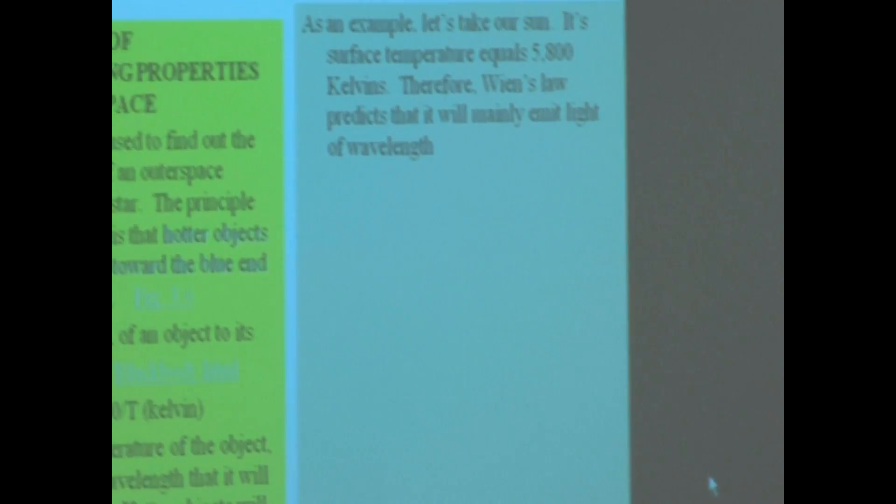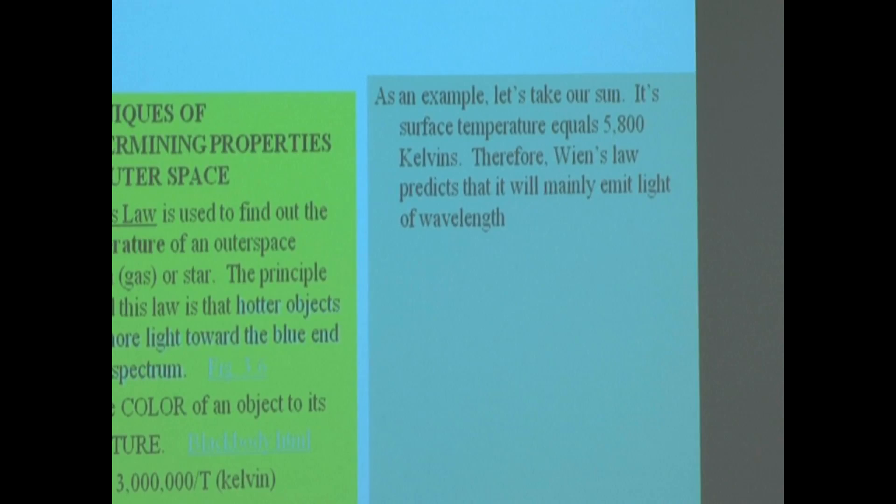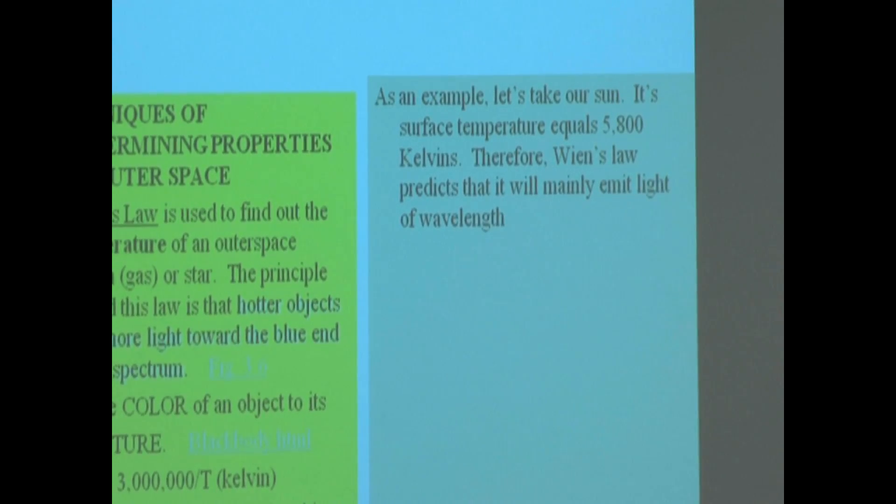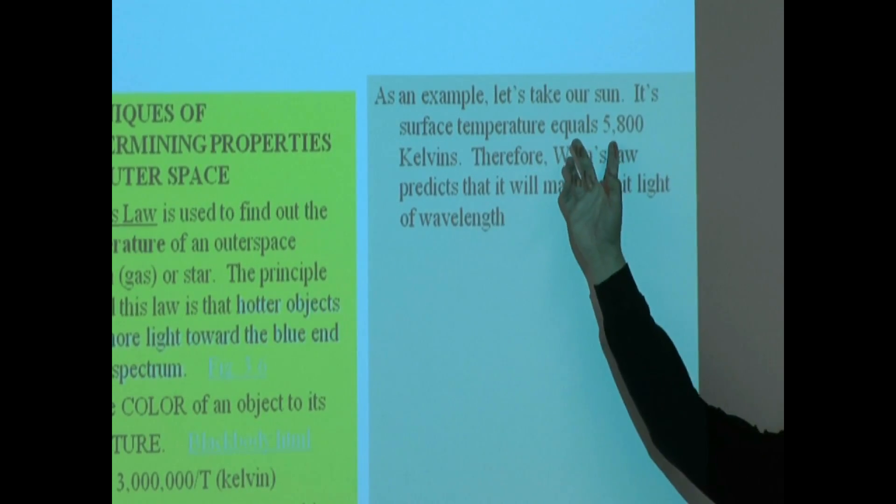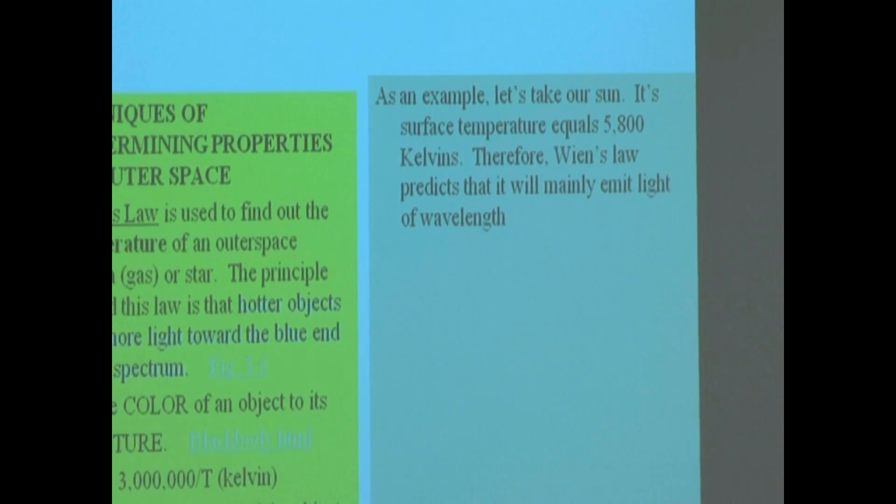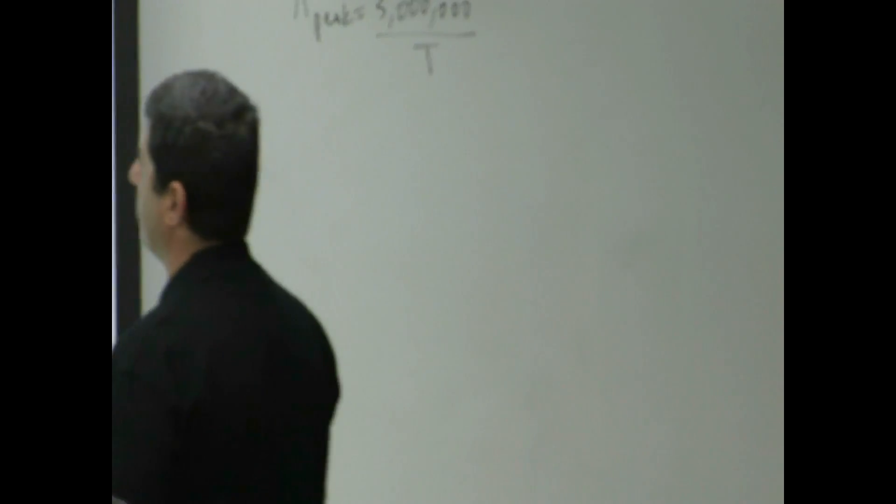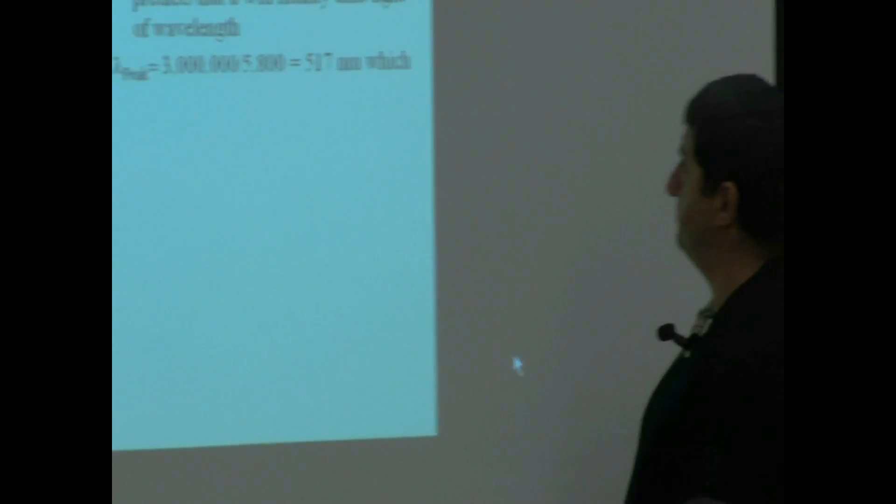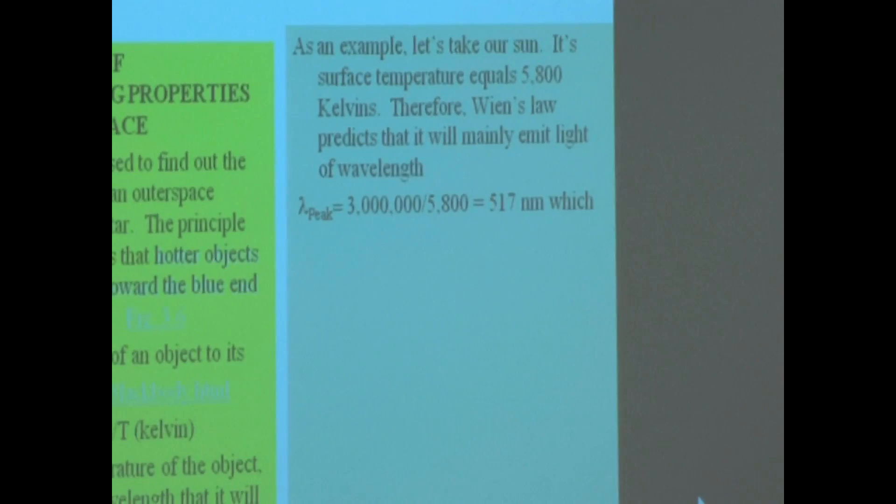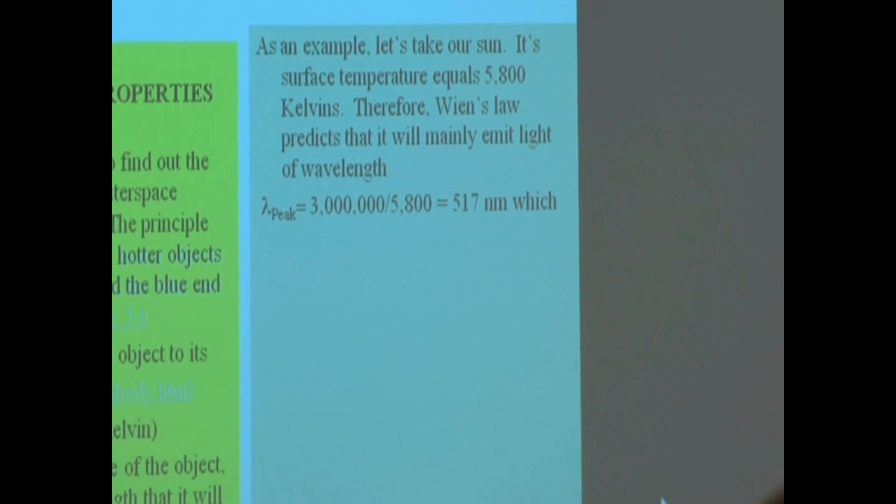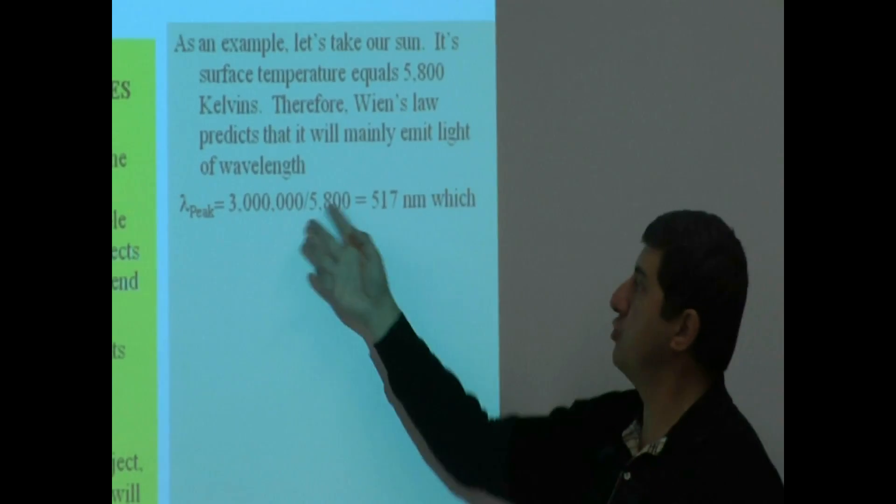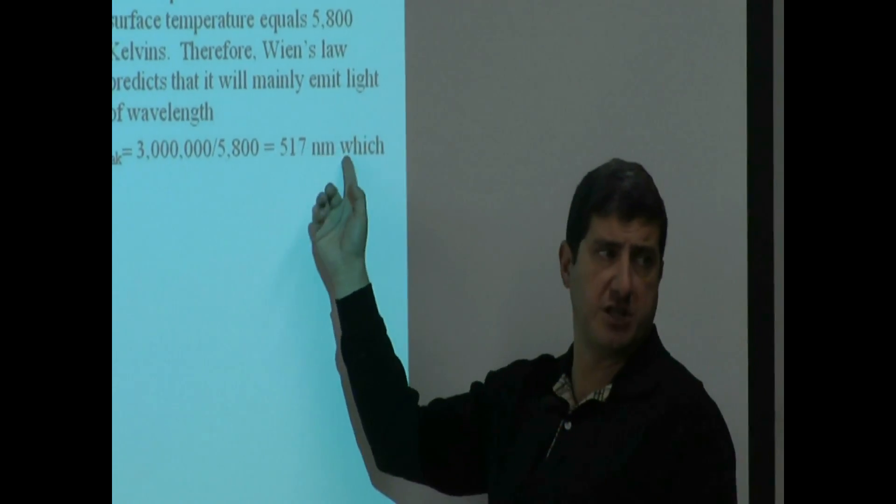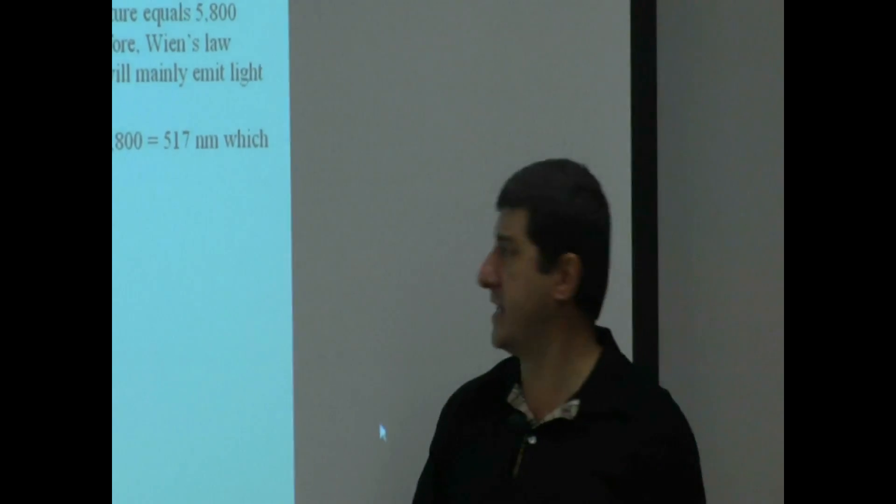As an example, let's take our sun. Its surface temperature equals 5,800 Kelvin. So we can use this law backwards, in a backwards way. If we already know its temperature, we can predict what it should mainly emit. So therefore, Wien's Law predicts that it will mainly emit light of wavelength. Then, you just simply divide 3 million, divide it by 5,800.